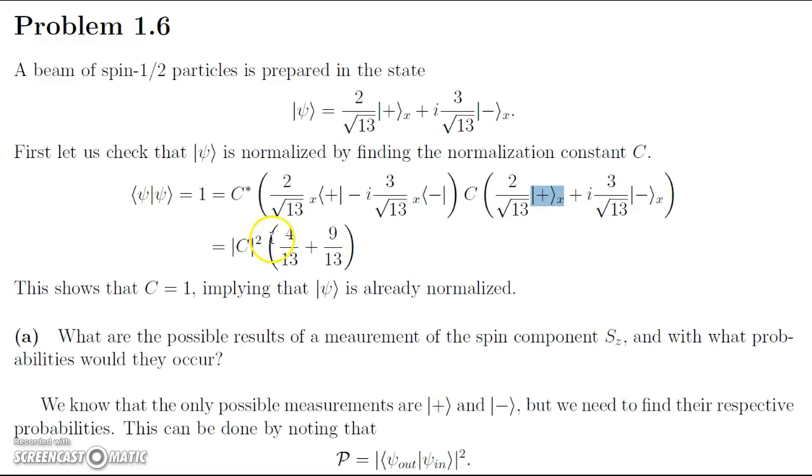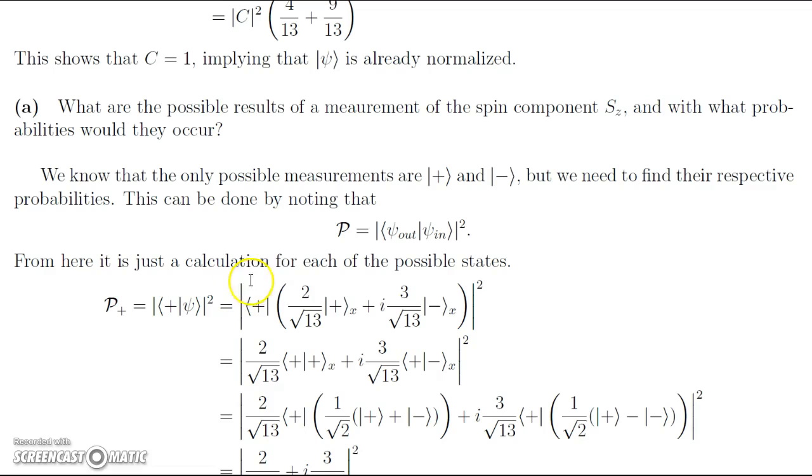When we add this together, we can note that since the phase doesn't have any physical meaning, we can just let the c, we can just choose the real portion, and we get c equals to 1, implying that this is already normalized as desired.